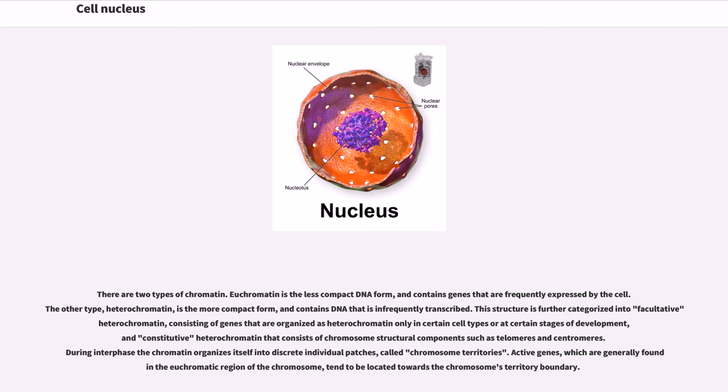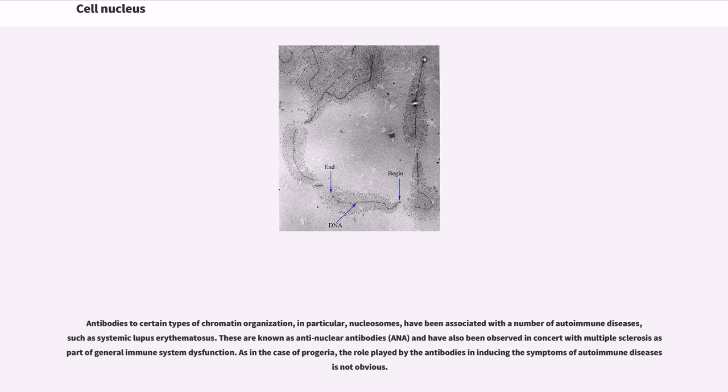There are two types of chromatin. Euchromatin is the less compact DNA form, and contains genes that are frequently expressed by the cell. The other type, heterochromatin, is the more compact form, and contains DNA that isn't frequently transcribed. This structure is further categorized into facultative heterochromatin, consisting of genes that are organized as heterochromatin only in certain cell types or at certain stages of development, and constitutive heterochromatin that consists of chromosome structural components such as telomeres and centromeres. During interphase the chromatin organizes itself into discrete individual patches, called chromosome territories. Active genes, which are generally found in the euchromatic region of the chromosome, tend to be located towards the chromosome's territory boundary. Antibodies to certain types of chromatin organization, in particular, nucleosomes, have been associated with a number of autoimmune diseases, such as systemic lupus erythematosus. These are known as antinuclear antibodies, ANA, and have also been observed in concert with multiple sclerosis as part of general immune system dysfunction. As in the case of progeria, the role played by the antibodies in inducing the symptoms of autoimmune diseases is not obvious.